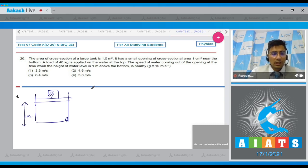We can apply Bernoulli's theorem at 1 and 2 and write down that p_0 plus mg by a that is the pressure at 1 plus rho gh will be equal to p_0 plus half rho v square.